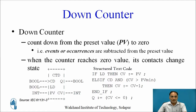Let us learn about the down counter in detail. The down counter counts down from the preset value to 0 — events or occurrences are subtracted from the preset value. When the down counter reaches 0, its contact changes state. A small structured text code equivalent to a down counter shows: if LD is true then CV is assigned the PV value; else when CD is true and CV is greater than PV, CV is decremented by 1 each time; otherwise Q will be set.